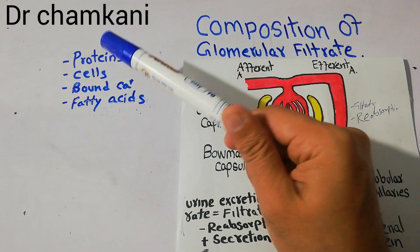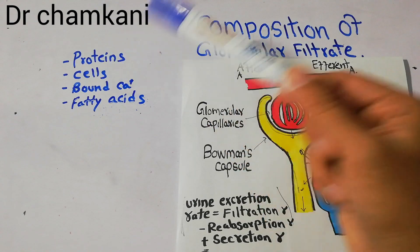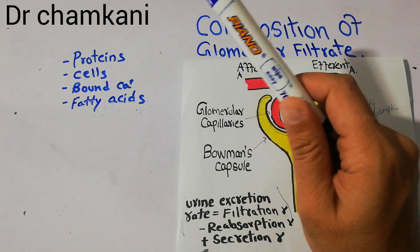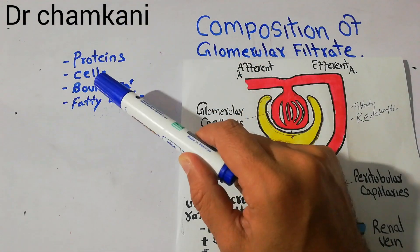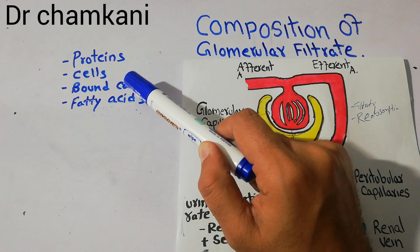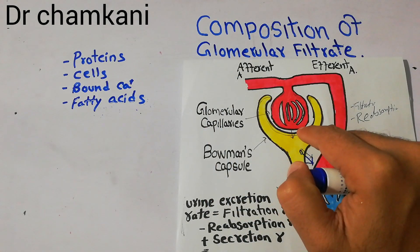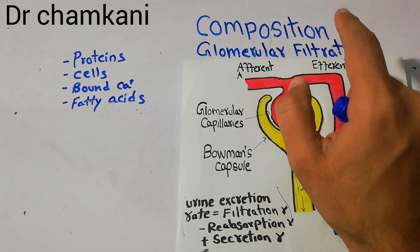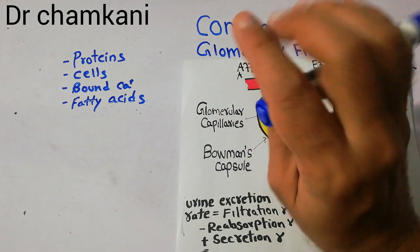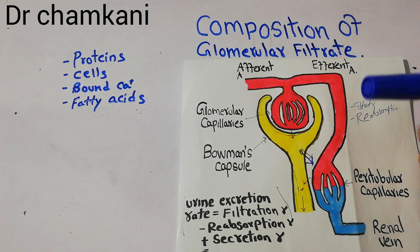Proteins will not be present in the filtrate, and the second excluded component is blood cells, such as red blood cells, which will not be part of the glomerular filtrate. Additionally, some substances are bound to proteins, like bound calcium. There are two types of calcium — one bound to protein and one free calcium — and the calcium bound to protein will not enter the Bowman's capsule. Similarly, some fatty acids are also bound to proteins and will not enter the Bowman's capsule.